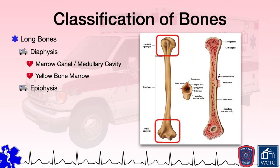The epiphysis portion of the bone is the wider region located at both ends of the long bone. The inside of this region is filled with spongy, cancellous bone, which is a very porous and highly vascularized type of osseous tissue. This spongy bone tissue is softer and weaker than compact bone tissue, which is denser, stronger, and seen on the exterior surface of long bones. In many long bones, this spongy bone within the epiphysis is filled with red bone marrow. On the exterior of the epiphysis is a thin, slippery layer of articular cartilage which helps absorb shock and reduce friction between bones that meet at a joint.